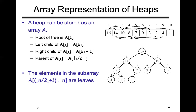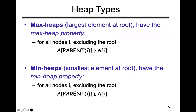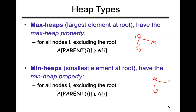In a maximum heap, every parent node should be greater than its children — for example, parent node 10 with children 5 and 4, where 10 is the greatest. In a minimum heap, the root node should be less than its children — for example, root 4 with children 10 and 5, where 4 is the smallest. So maximum heap means the parent is always the highest; minimum heap means the parent is always the lowest.